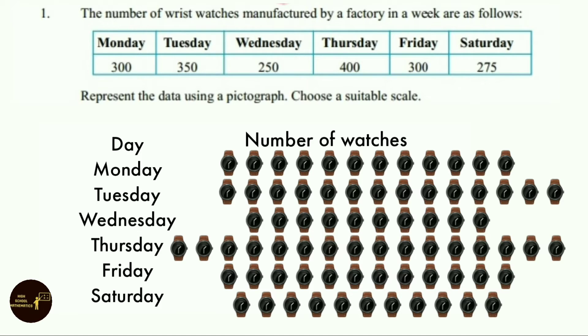On Thursday 400 watches were manufactured, so we have represented with 16 watch symbols. On Friday 300 watches were manufactured, so we have represented with 12 watch symbols. And on Saturday 275 watches were manufactured, so we have represented them with 11 wristwatch symbols.